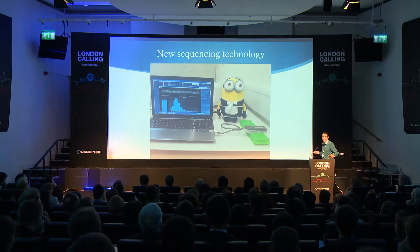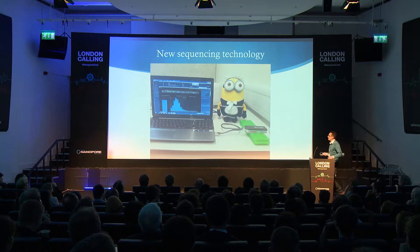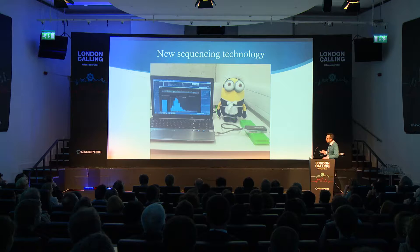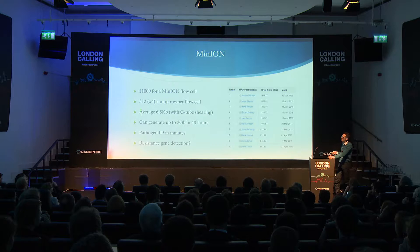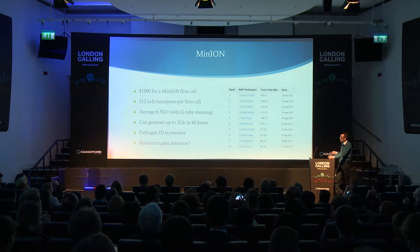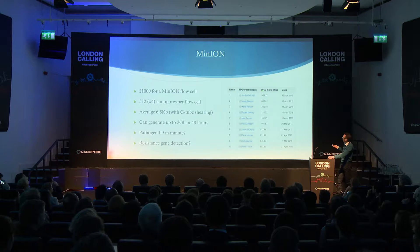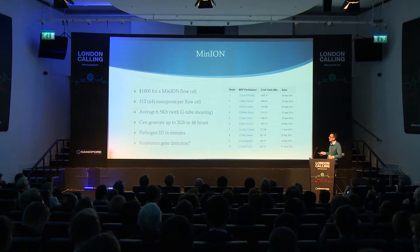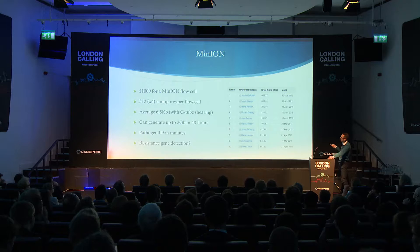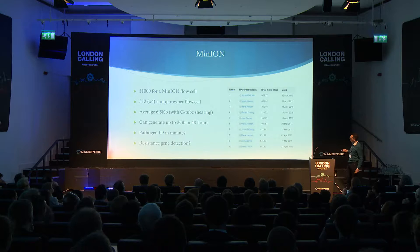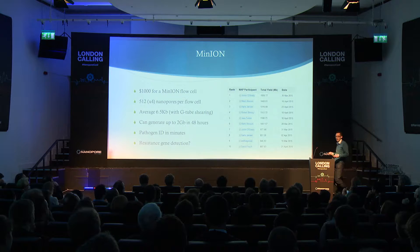So what about the MinION? These are my MinIONs — this is what I use in the lab. Everyone knows it costs about $1,000, with 512 pores. With R9 2D reads, we get around 6.5 kb reads on average and can generate up to two gigabases, which has recently been demonstrated. This is the league table of most yield, and what you can see is that everything's from March or April — all these high yields are coming very recently. So the technology is improving rapidly.